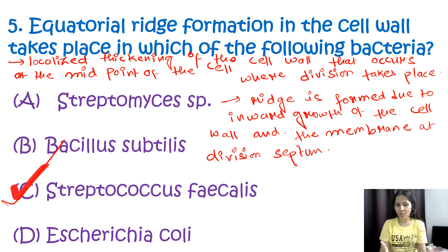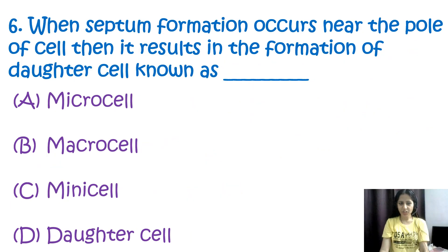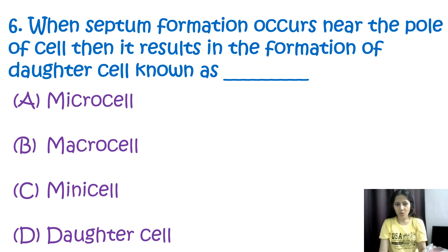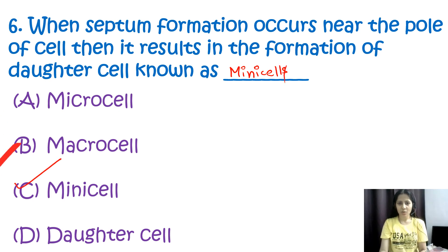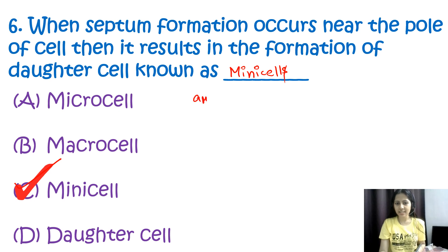Question number six: when septum formation occurs near the pole of the cell, it results in the formation of daughter cells known as mini cells. The correct option is C. Mini cells are small anucleate cells which are produced when the division septum forms asymmetrically near one of the poles of the parent cell.